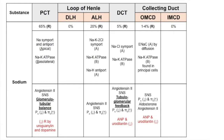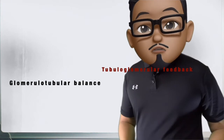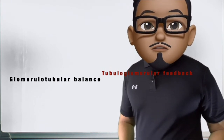The renin-angiotensin-aldosterone system is involved in active sodium reabsorption, while atrial natriuretic peptide, urodilatin, and dopamine decrease its reabsorption.